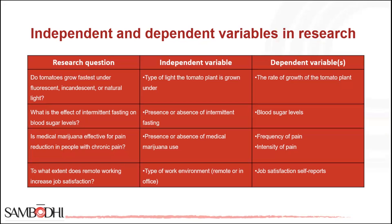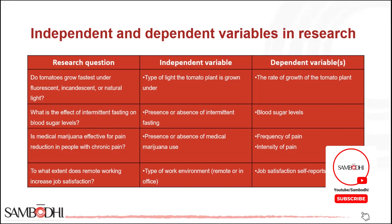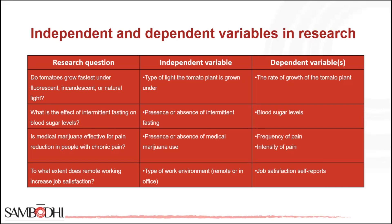The IV here is the type of light the tomato plant is grown under, and the DV is the rate of growth of the tomato plant. Next, the research question asks: what is the effect of intermittent fasting on blood sugar levels? The presence or absence of intermittent fasting is the IV, and blood sugar levels is the DV.